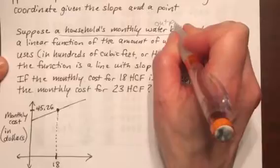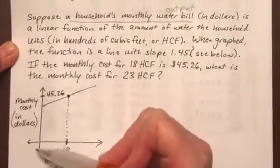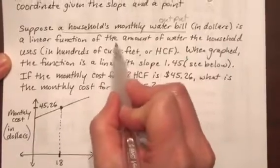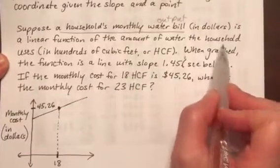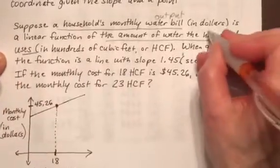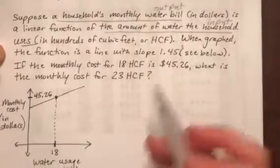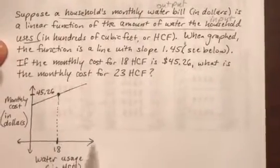It's a linear function of the amount of water the household uses. So the amount of water the household uses is our input, and that's along the x-axis.